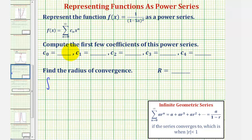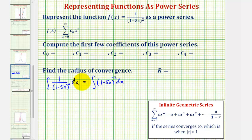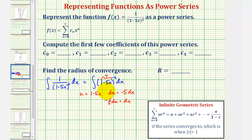We want to find the integral of 1/(1 - 5x)² with respect to x. We can write this as the integral of (1 - 5x) to the power of negative two. We'll perform u-substitution where u = 1 - 5x, and therefore du = -5 dx, so dx = -1/5 du.